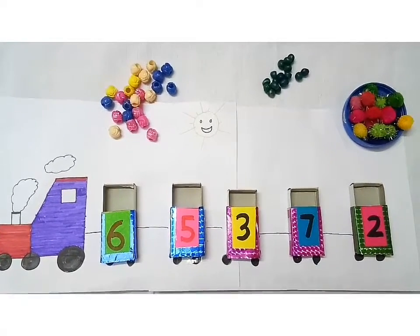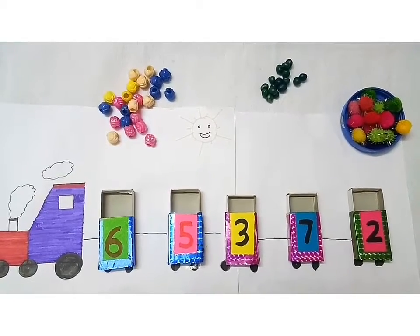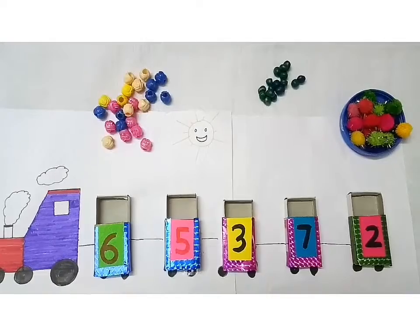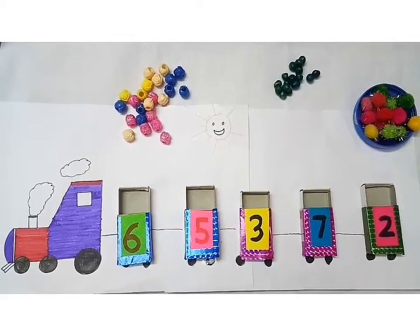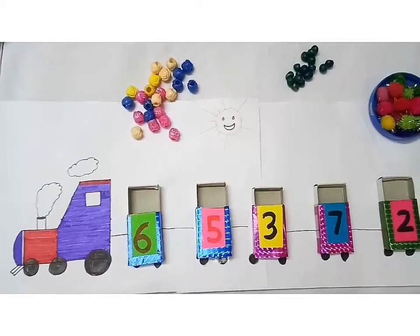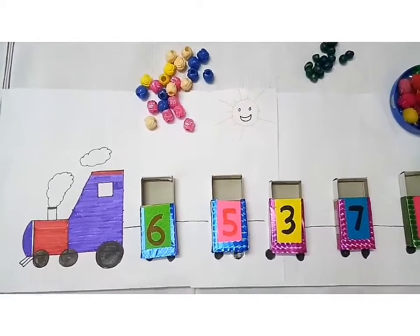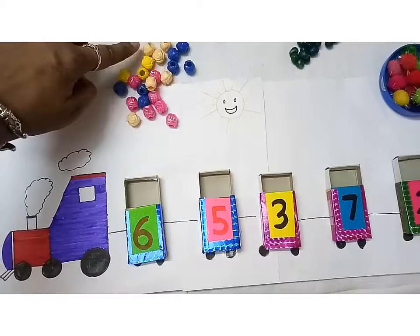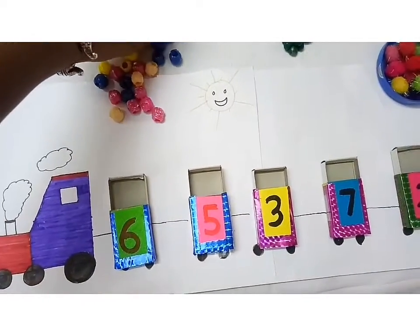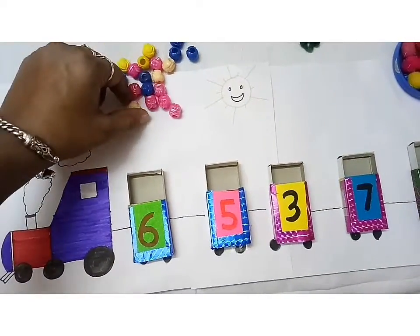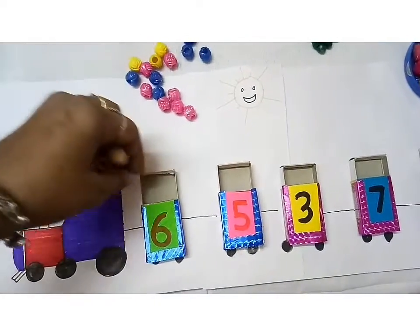So enjoy this and make it. You can see that on the first box it is written six, so we have to count six beads and put in this box. One, two, three, four, five, six. So I am putting all these six beads in the box. And what is the color of these beads? The color of this bead is green.